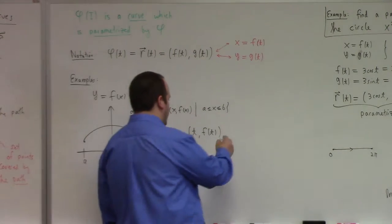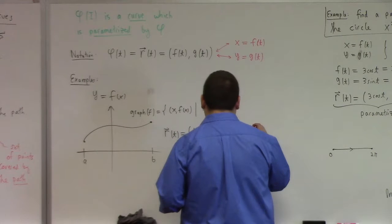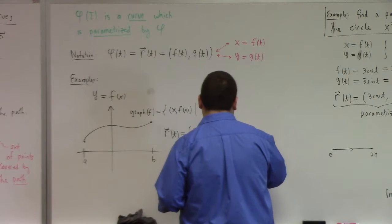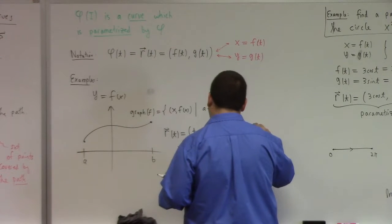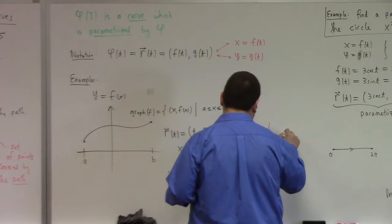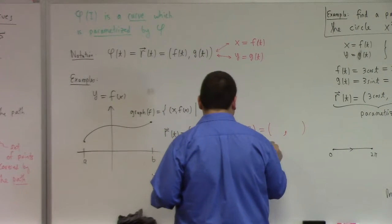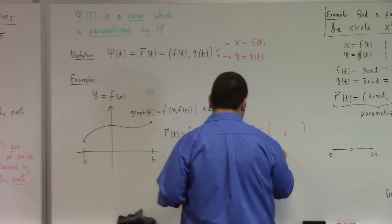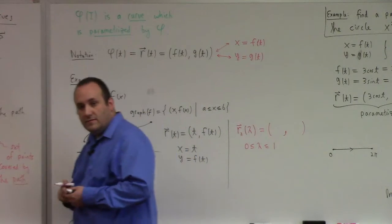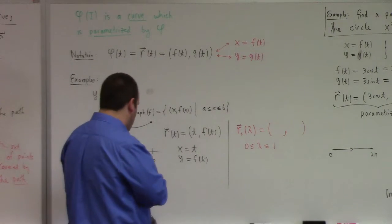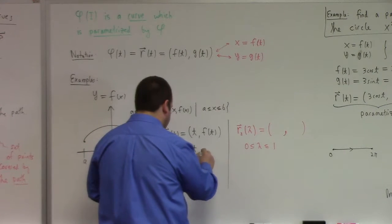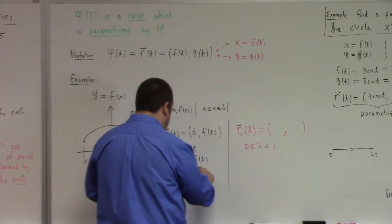But what else could you do? Suppose I want to say r2 of lambda equals something comma something else. And I want 0 less than or equal to lambda less than or equal to 1 to be the domain for this parameterization of the graph, same graph. How would I do that? This was for a less than or equal to t less than or equal to b.